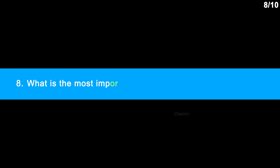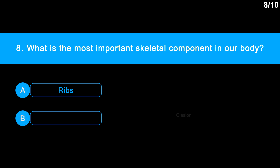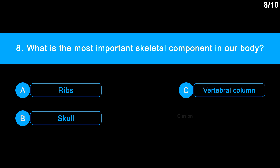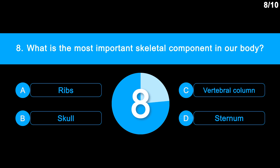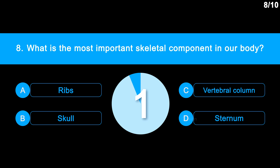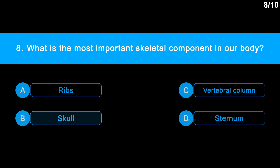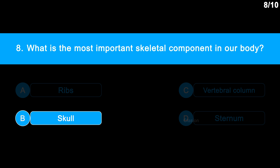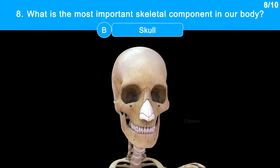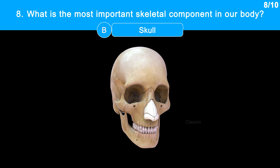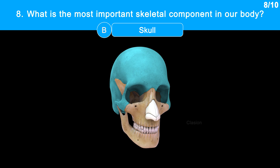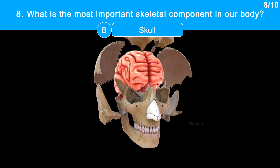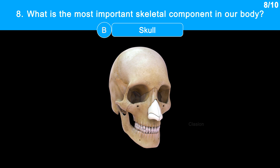Question 8: What is the most important skeletal component in our body? Option A, ribs. Option B, skull. Option C, the vertebral column. Option D, sternum. The correct answer is option B, the skull. The skull is the most important bone in our body. It is actually made up of different bones of the head and face — some protect our brain while others make up the structure of our face.